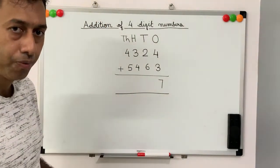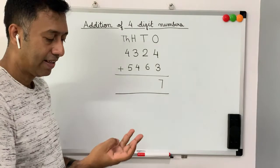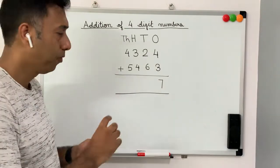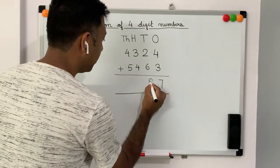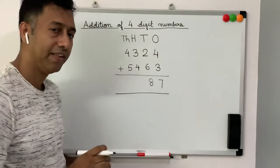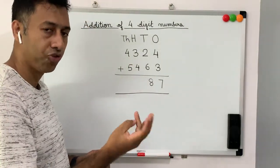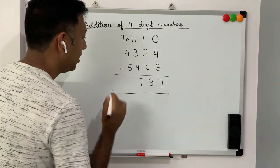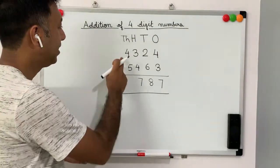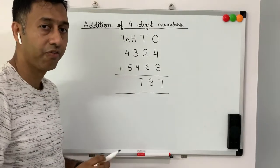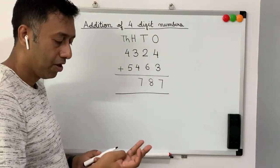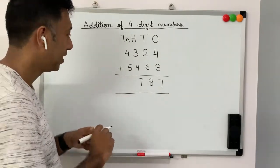6 plus 2 is 8. And then 4 plus 3 is 7. And then we will add the thousands digit, which is 5 plus 4, which is 9.